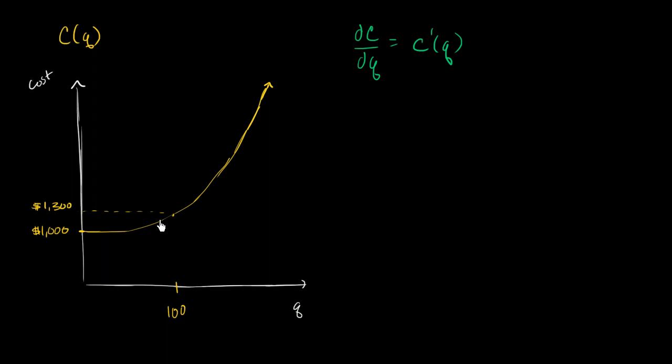Well, if we think about it visually, we know that we can think about the derivative as the slope of the tangent line. So for example, that's the tangent line when q is equal to 100. So the slope of that tangent line is, you could view as c prime, or it is c prime of 100.